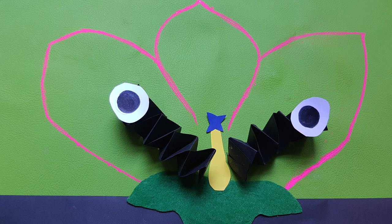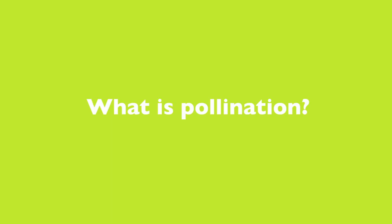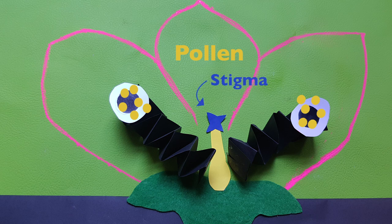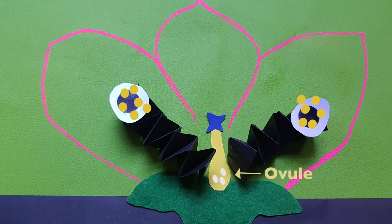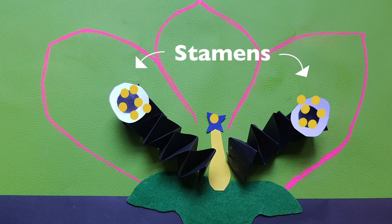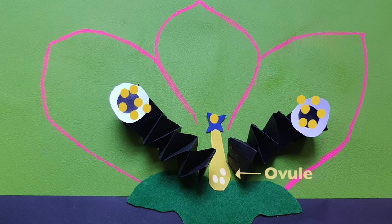Bees help plants to keep growing and giving us food — but how? Through pollination. Flowers have parts called stamens that make sticky pollen. Flowers also have a stigma that sits on top of a pistil, that sits on top of an ovule. The ovules are where seeds are made. Pollination is when pollen is moved from a plant's stamen to its stigma. It is very important because it helps make new seeds. When bees go looking for sweet nectar inside flowers, pollen gets stuck to them and moves from the stamen to the stigma, and the seeds are made in the ovule.